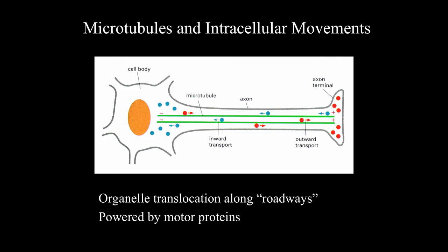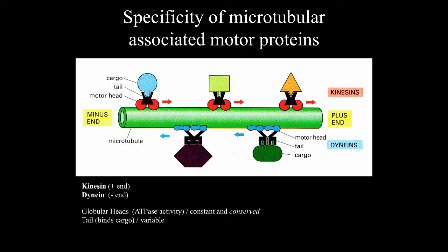Organelle translocation within cells can occur along roadways or railroad tracks of microtubules. Transport along these microtubules is powered by microtubular motor proteins. In an axon, movement from the cell body toward the axon terminal is anterograde, while movement from the axon terminal back to the cell body is retrograde. The direction depends on the specificity of the microtubule-associated motor proteins.